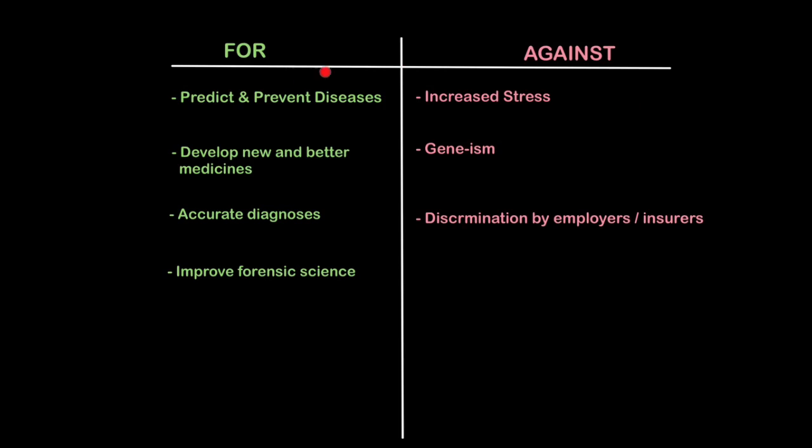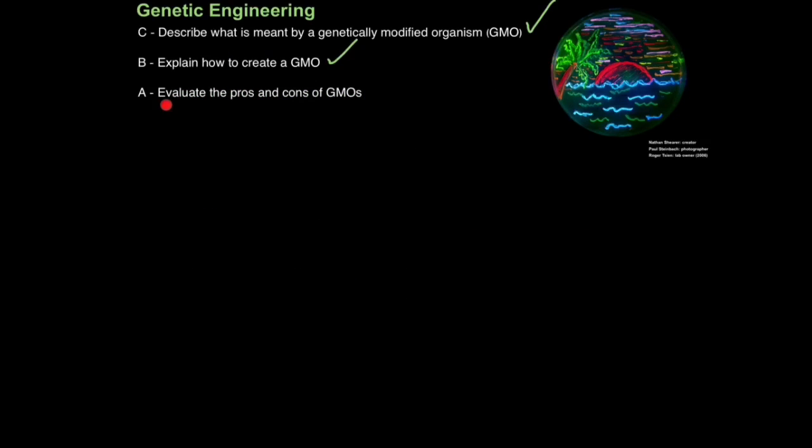So for an easy six marks, just remember two or three of these arguments on both sides. And that is how you evaluate the pros and cons of genetically modified organisms.